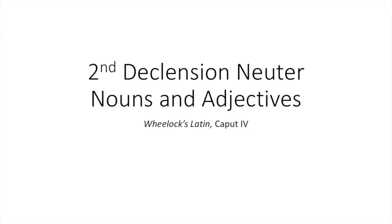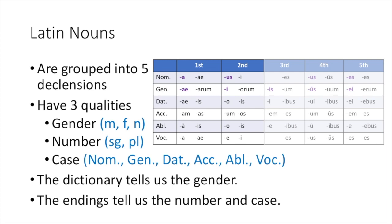Hello, and welcome to another video to learn how to read the wonderful Latin language. Today's video will tell you about how to read second declension neuter nouns and adjectives. We'll start with neuter nouns, and then we will move on to the adjectives that modify these neuter nouns. All Latin nouns are grouped into five declensions. You've already learned about the first and second declension, or at least the masculine and feminine nouns in these declensions. So today we'll learn about the neuter nouns in the second declension.